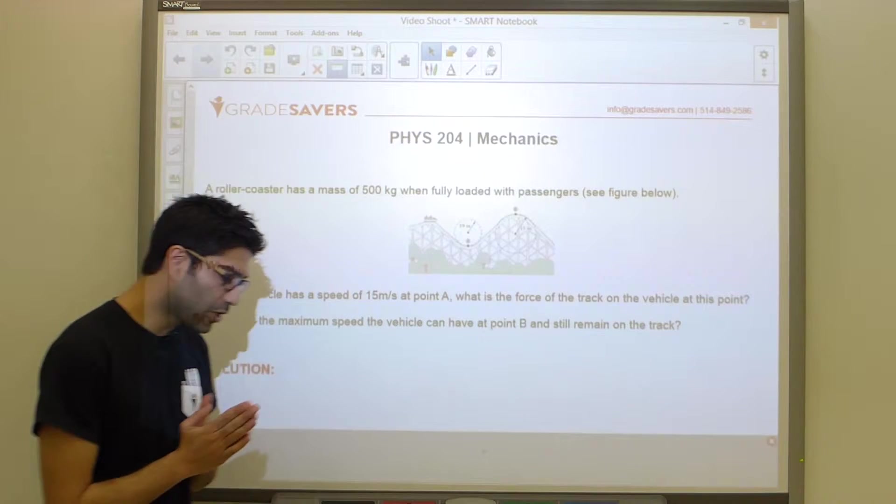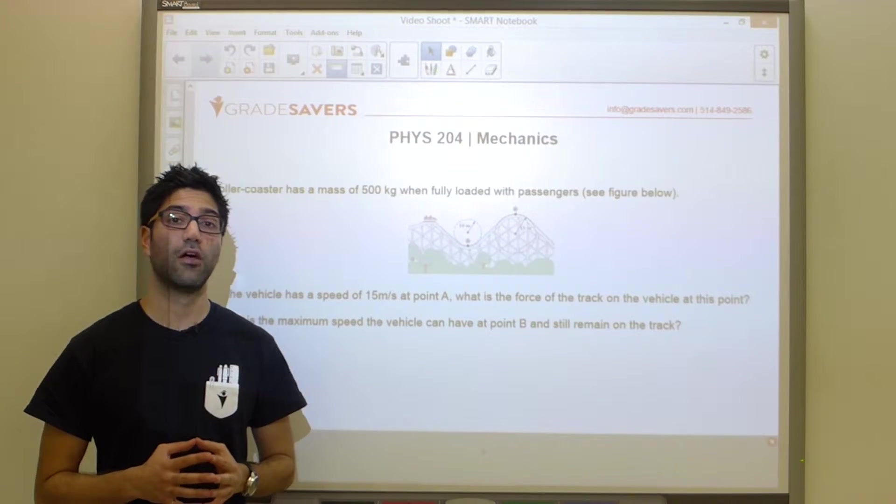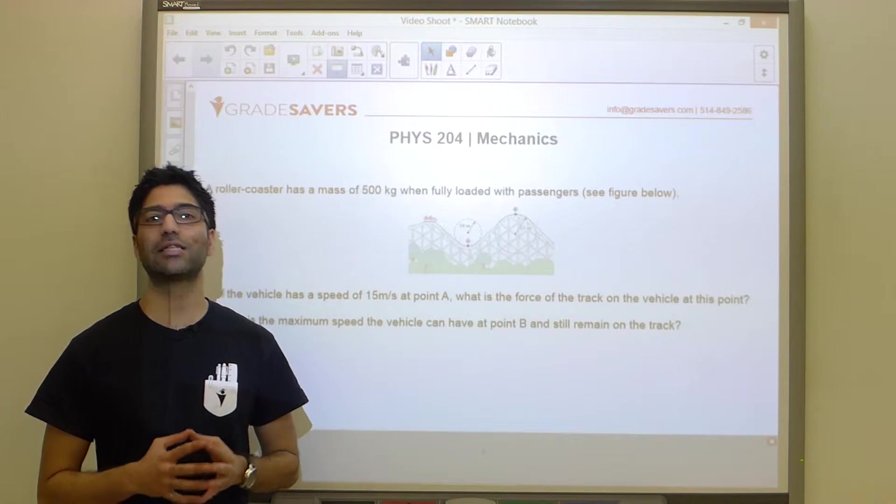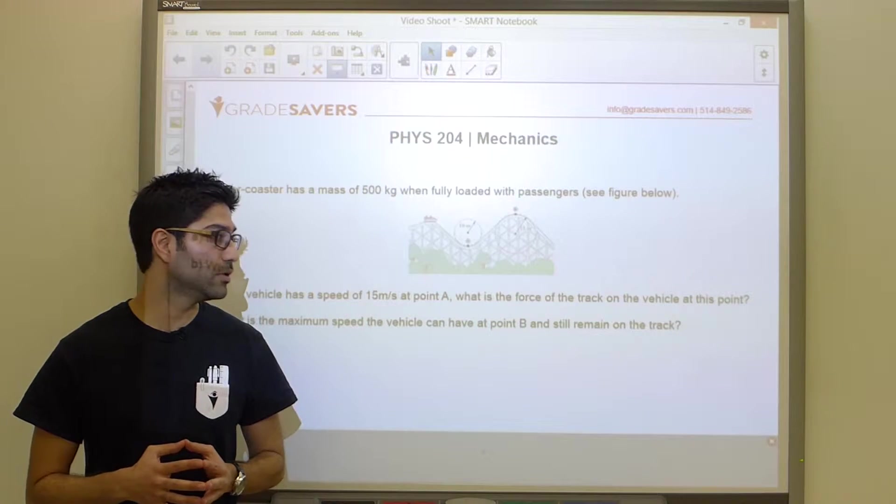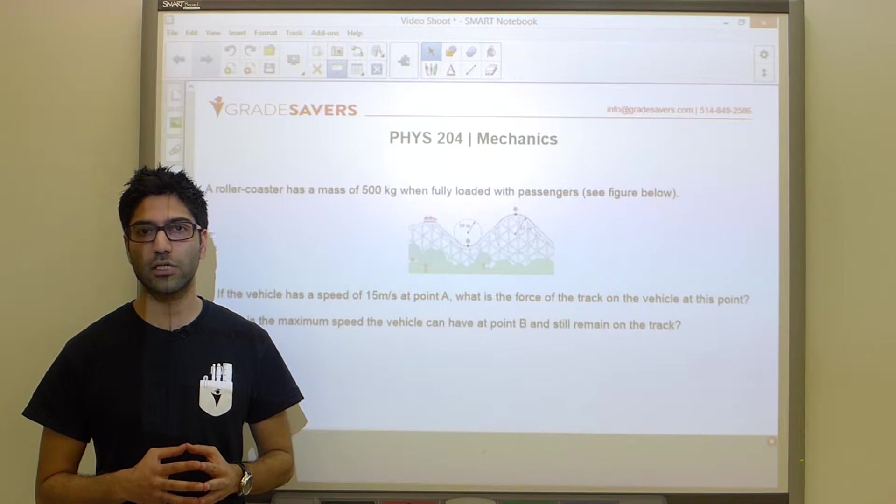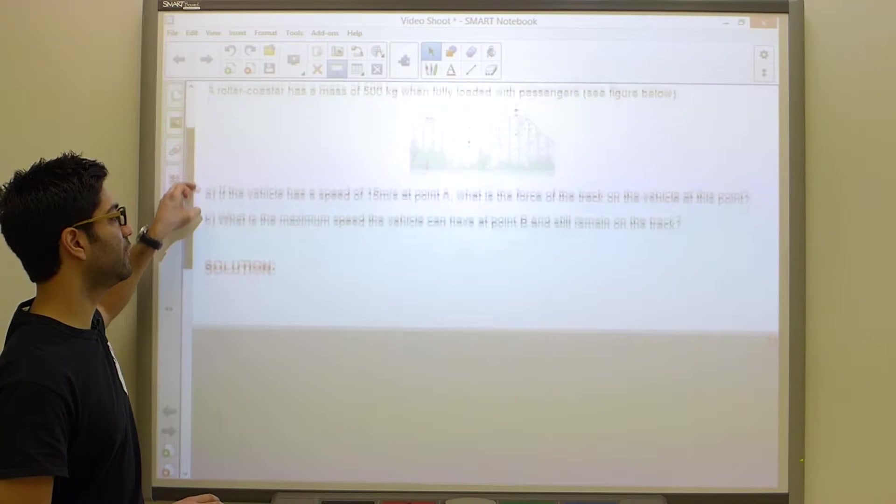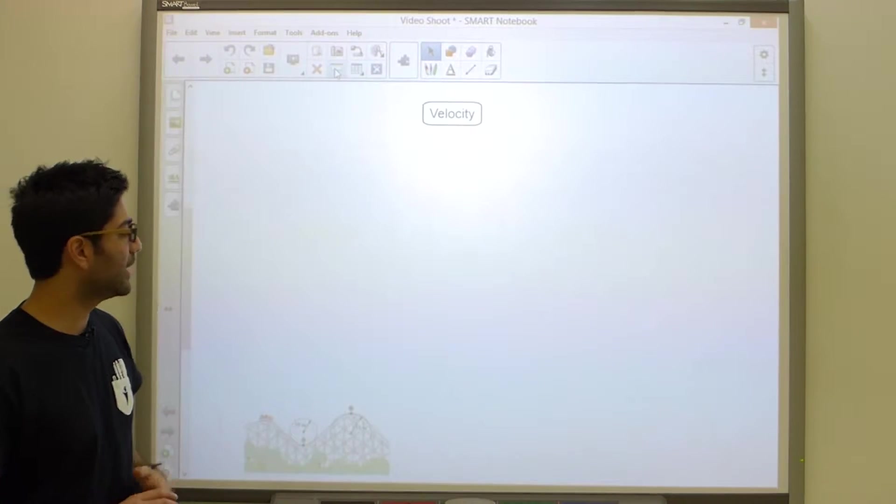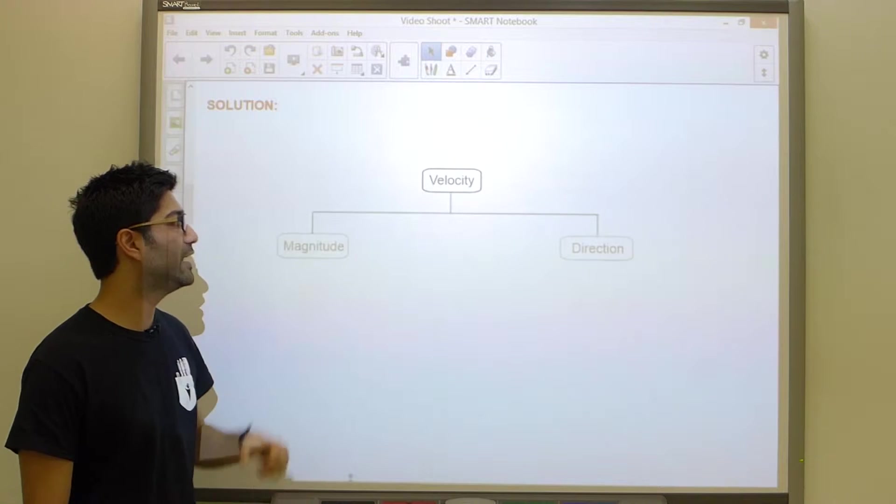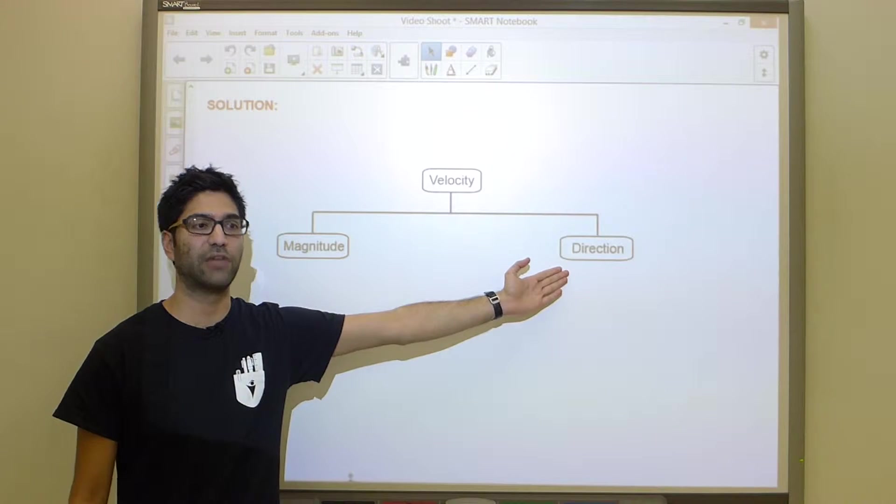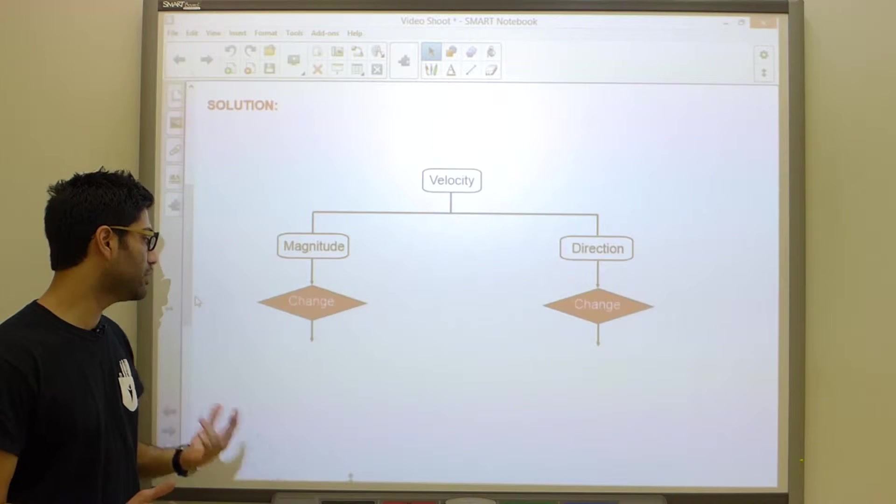Before we go there, you should understand that acceleration arises due to different factors. From a kinematics point of view, a body can accelerate due to a change in velocity. From a dynamics point of view, a body can accelerate if there is a net force acting on the body. Let's concern ourselves with the kinematics point of view. Acceleration can arise due to a change in velocity. Velocity is a vector containing both magnitude and direction.